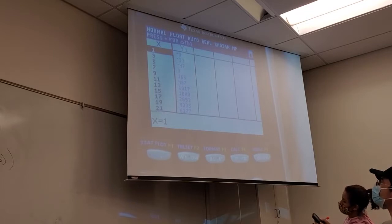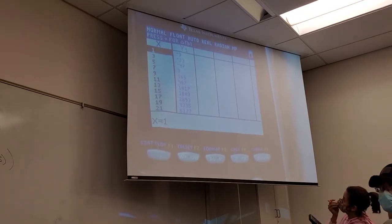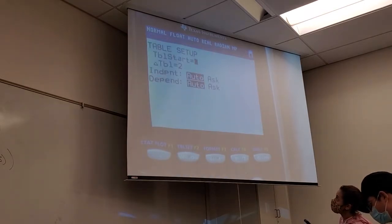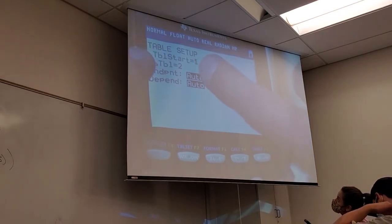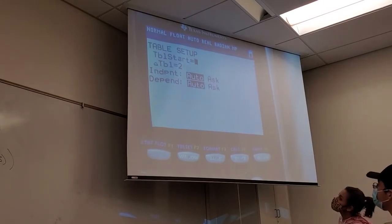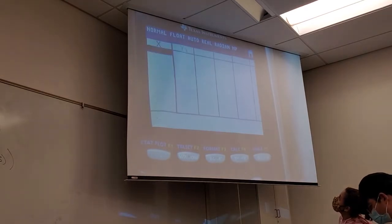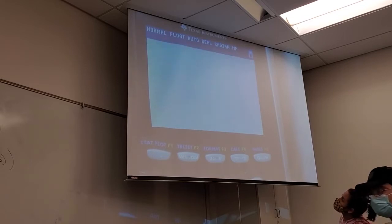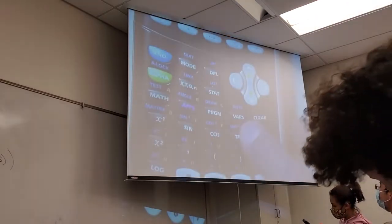I only need the first three values. Also, if you need more decimal places than the table gives you — sometimes online homework requests six decimal places — go to VARS, Y-VARS, Function, Y1. Then you can directly ask the calculator to evaluate Y1 at a specific input and get more decimal places.